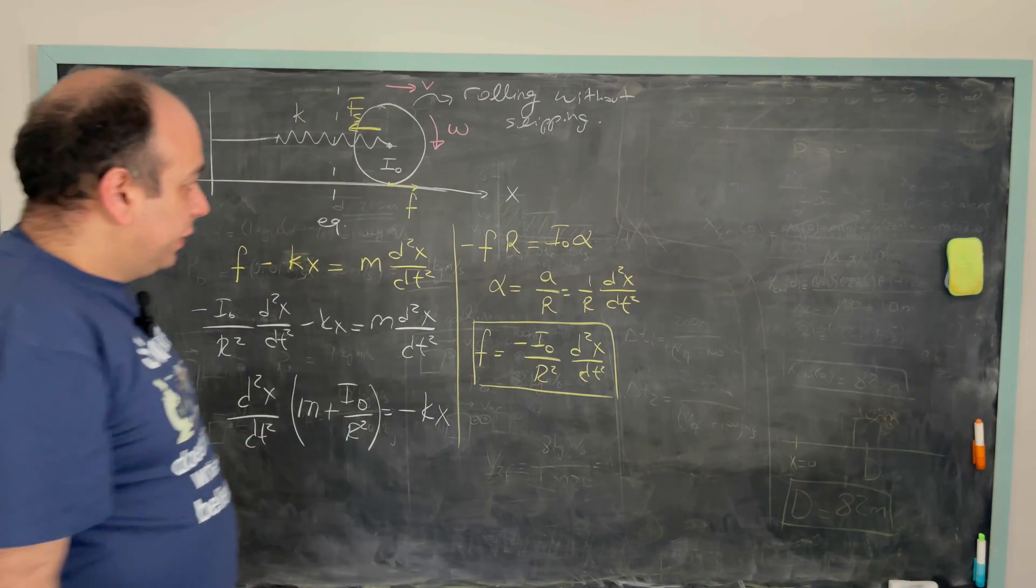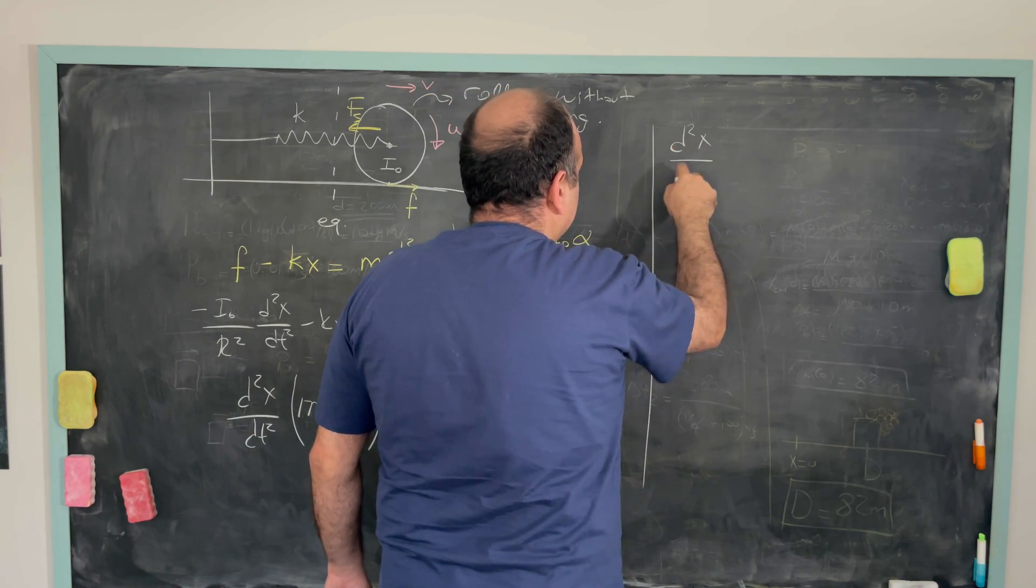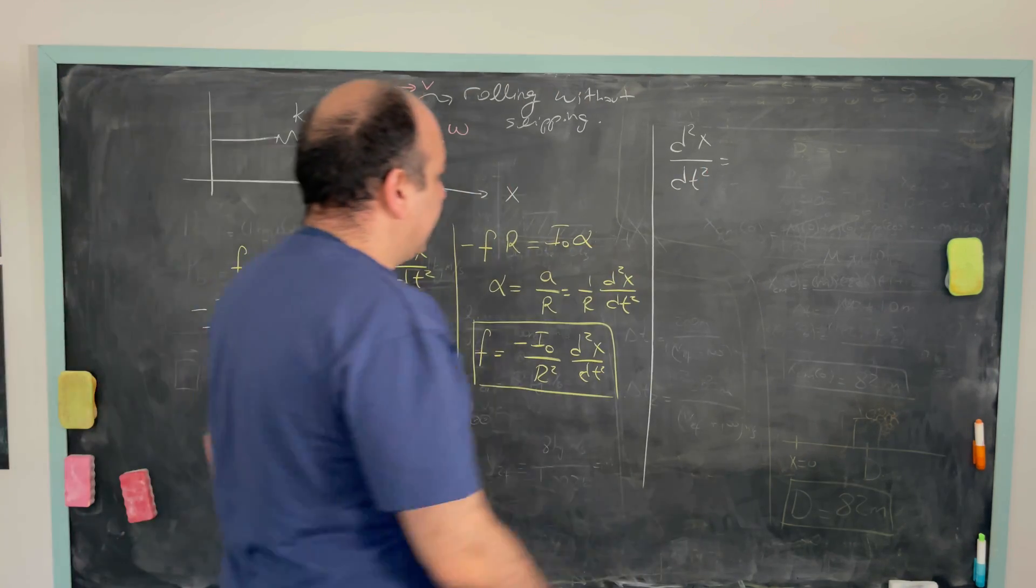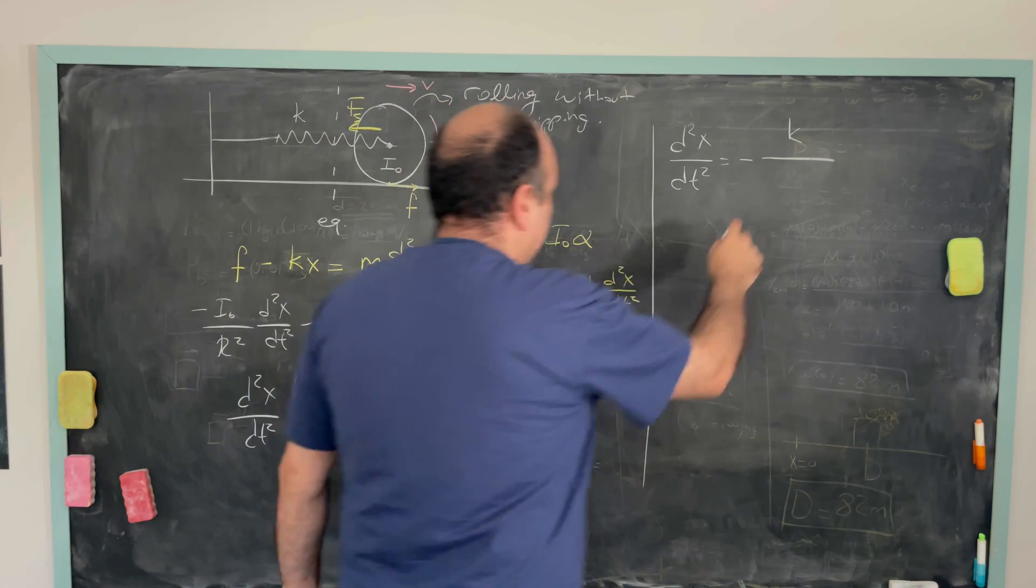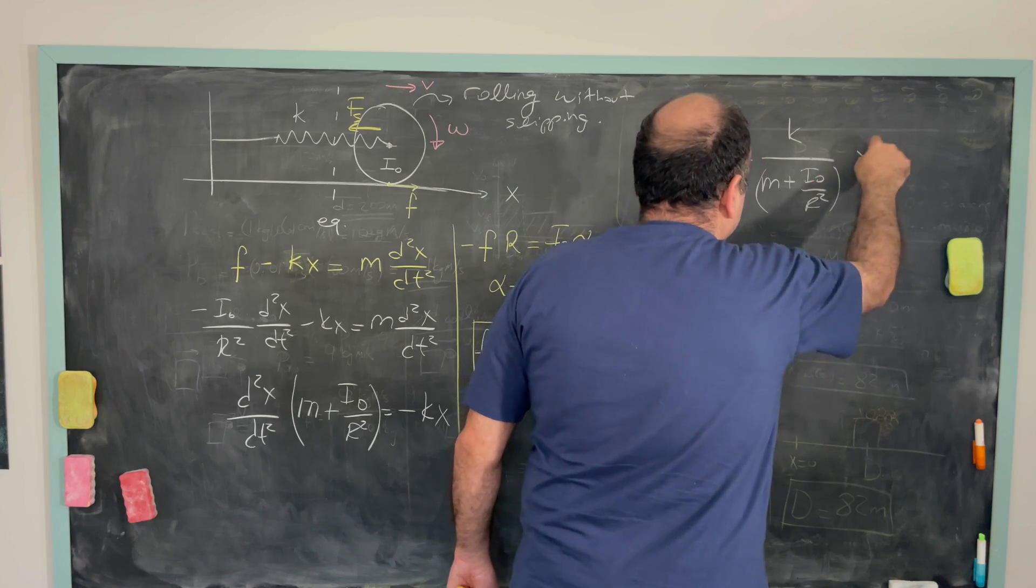So starting from here, let's write it down in a different way. So d square x over dt square is simply equal to minus k over m plus i0 over r square times x.